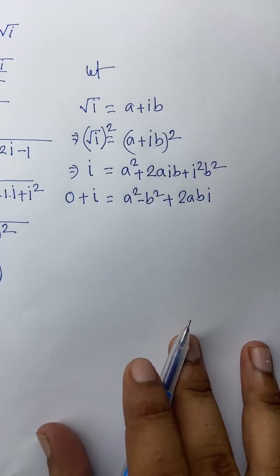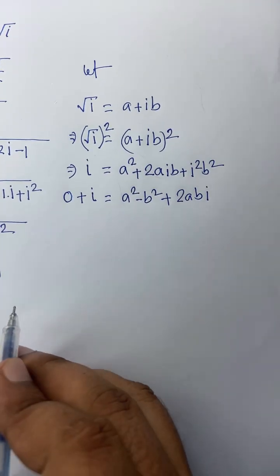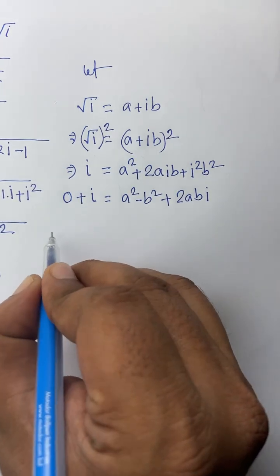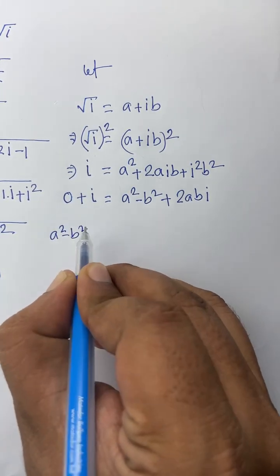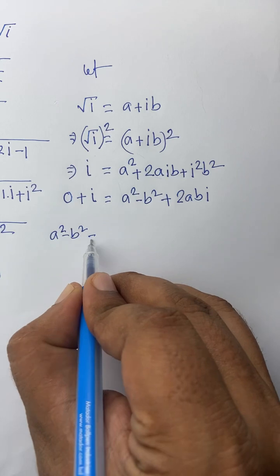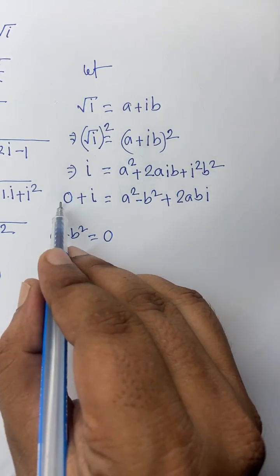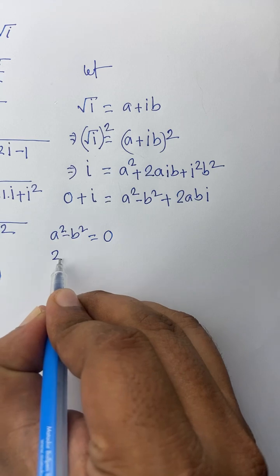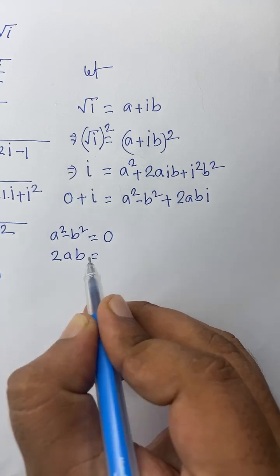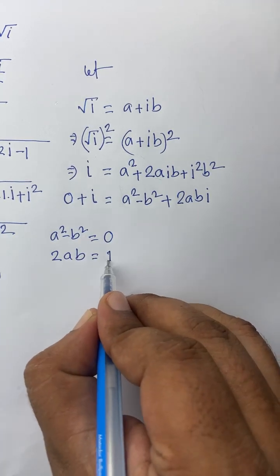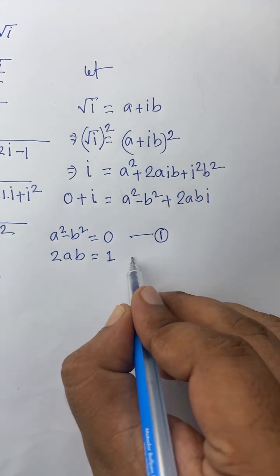If I compare the real part and imaginary part, I can see easily that a squared minus b squared equals 0, because the real part must be zero. And 2ab equals 1. So this is our first equation and this is our second equation.